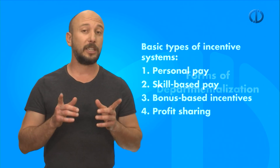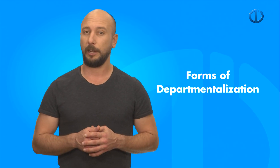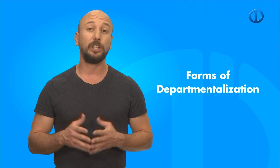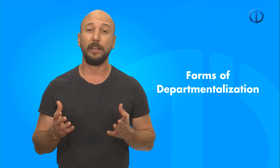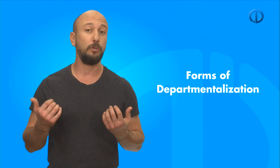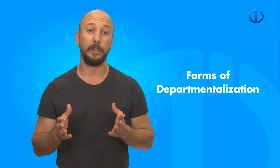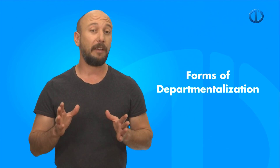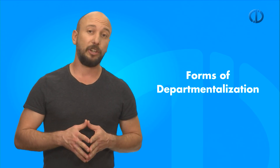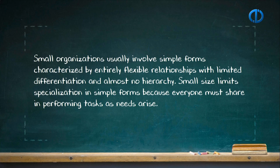Let's move on to forms of departmentalization. A fundamental characteristic of organization structure is departmentalization, which is the basis for grouping positions into departments and departments into the entire organization. Managers make choices about how to use the chain of command to group people together to form their work. There are five significant forms of departmentalization: simple, functional, multidivisional, and matrix.